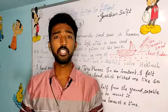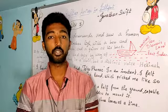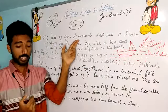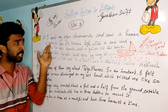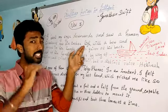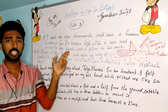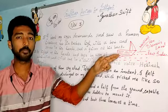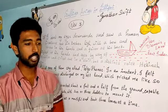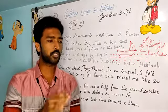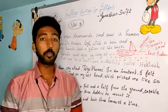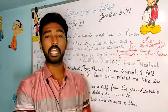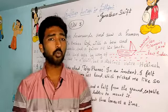Gulliver felt something crawling around his body, moving towards his chin. He bent his eyes downwards and saw a human creature — not even six inches tall — with a bow and an arrow in his hands and a quiver at his back to hold arrows. In the meantime, he could see nearly 40 of the same kind. They were all tiny little people, and most of them had bows and arrows. Gulliver found out he had been tied by those tiny creatures.